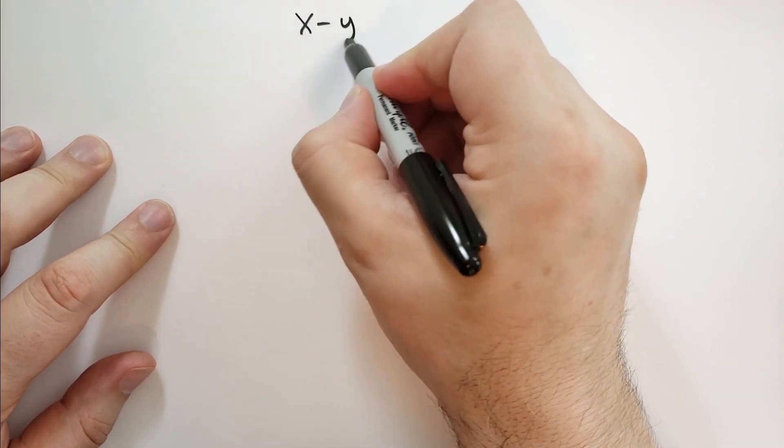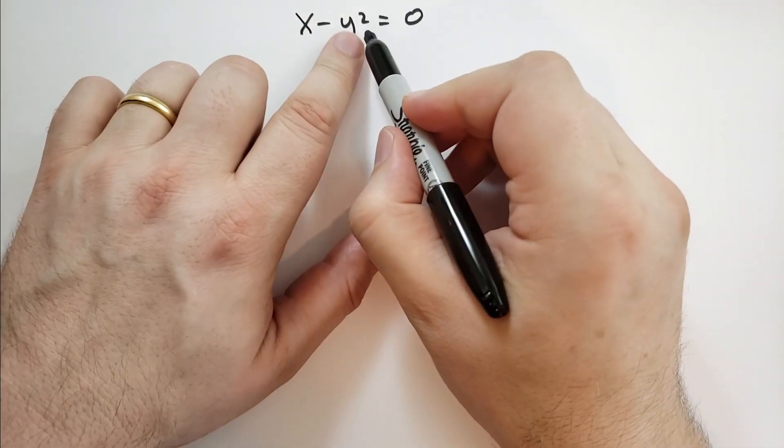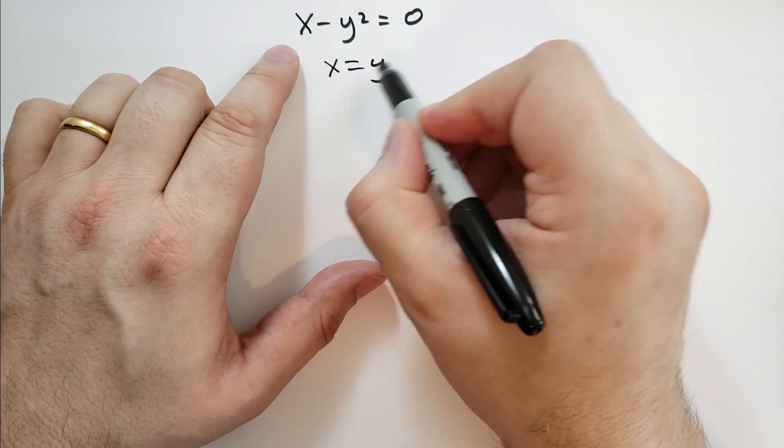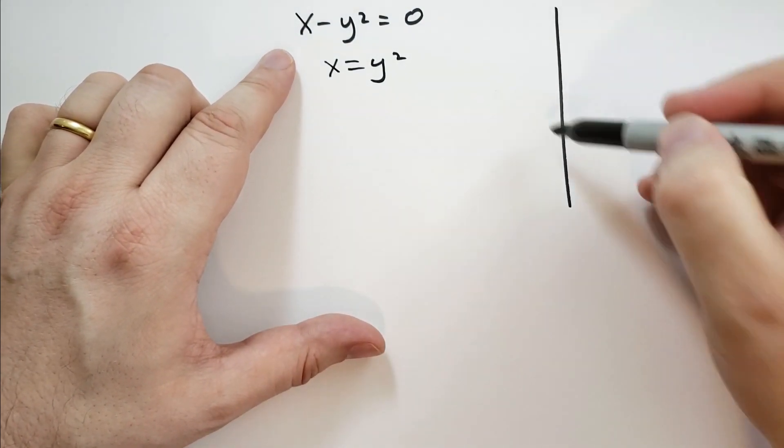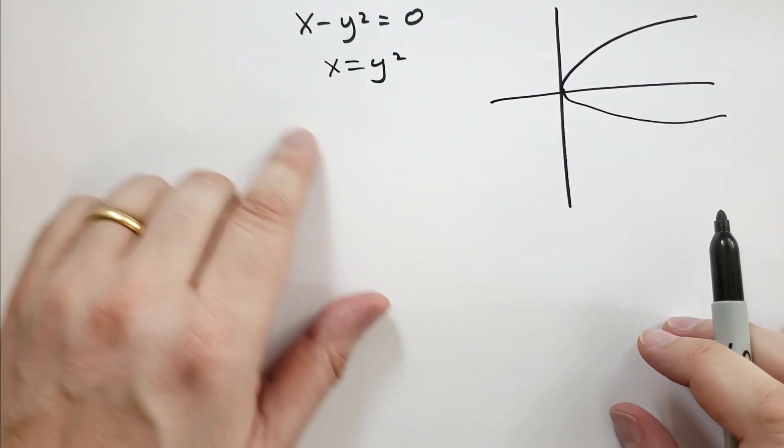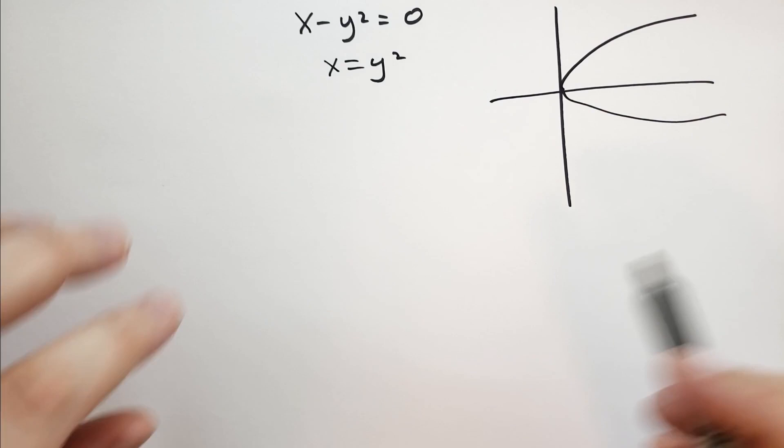What happens when we have a different sort of parabola? We have an equation like x minus y squared equals 0. Notice that the y term is squared, x is not squared. So we write this x equals y squared, and those points are going to look like this—basically it's a parabola out this way to the right.